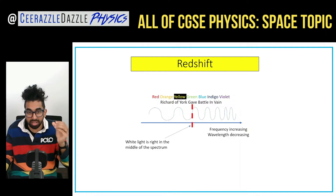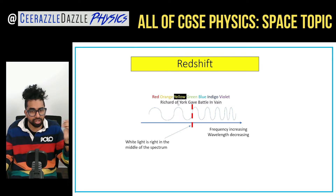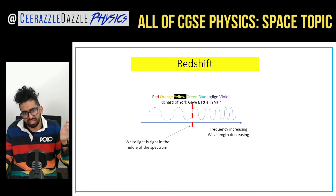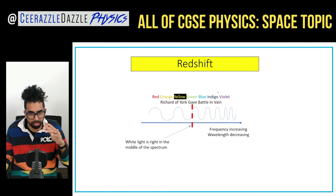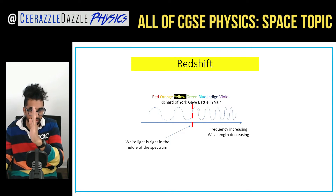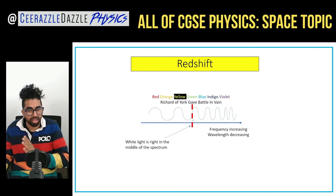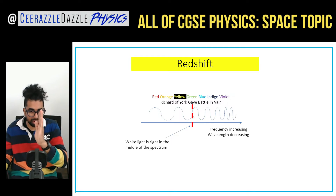Now we use our understanding of the Doppler effect when talking about light. This is the visible light spectrum: red, orange, yellow, green, blue, indigo and violet — 'Richard of York gave battle in vain.' The left-hand side we'll call the red side and the right-hand side the blue side. White light has an equal distribution of all the wavelengths, so we put it right in the middle — that red line represents white light.